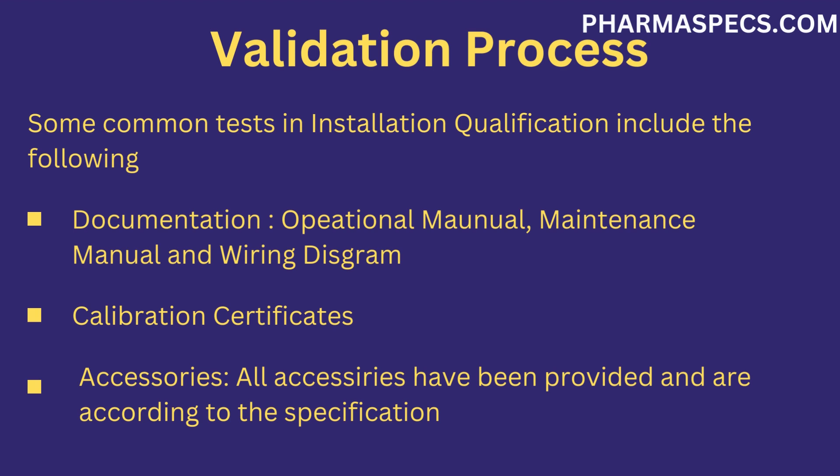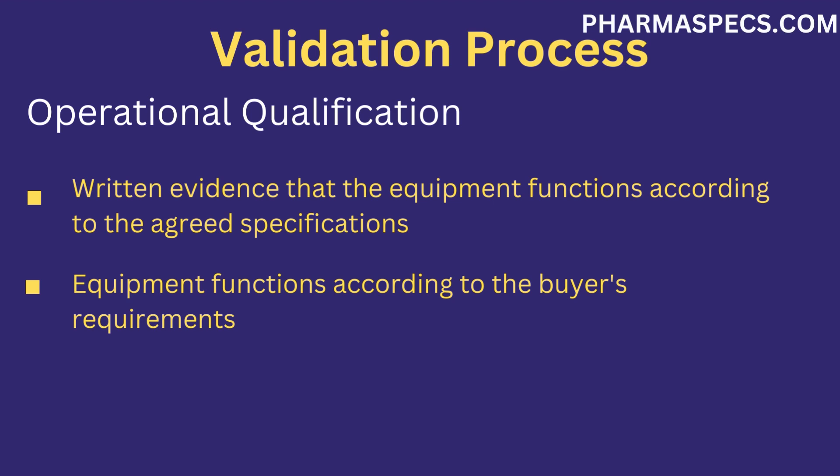Calibration certificates for all measuring devices, whether analog or digital, must be provided — examples include temperature, pressure, and air flow. Calibration certificates must be valid and not expired. The supplied equipment must also contain all the accessories that were agreed upon during the design phase.